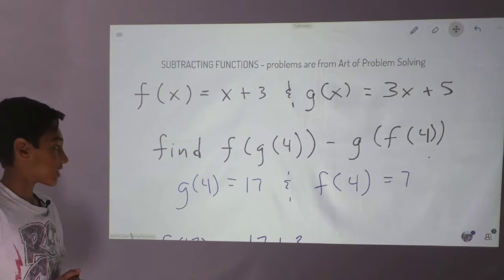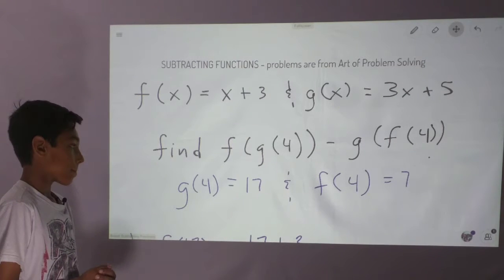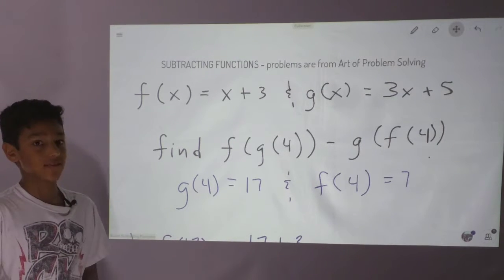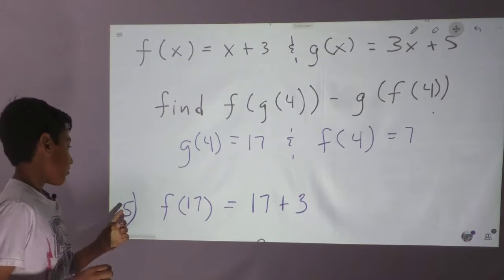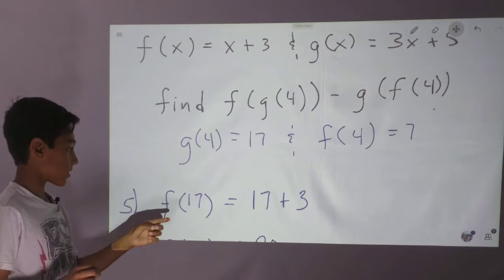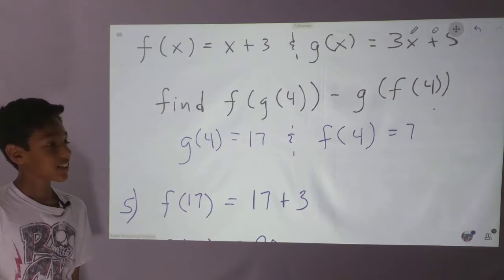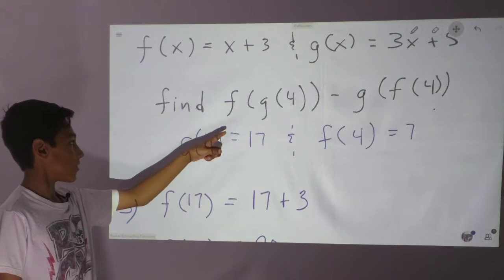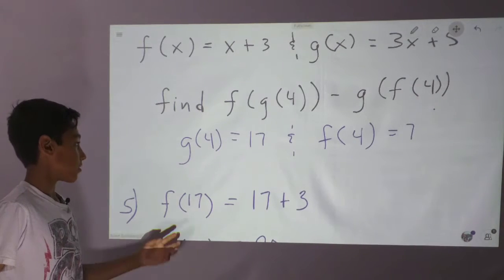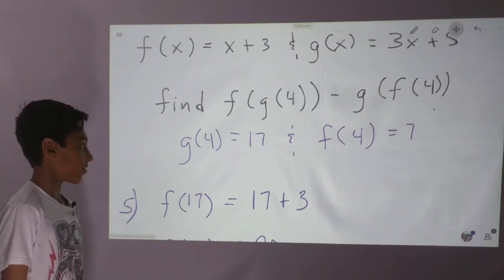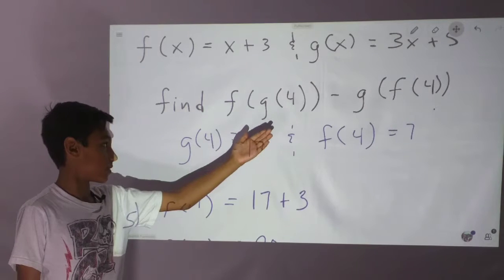So we have g of 4 equals 17 and f of 4 equals 7. So we go to f of 17 equals 17 plus 3. How did we get that? We got it from f of g of 4, so we know that g of 4 equals 17, so you get f of 17.